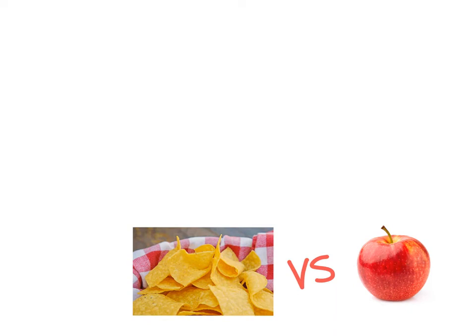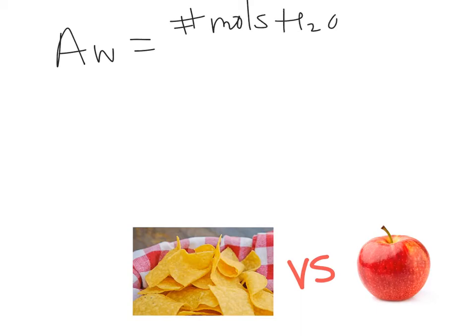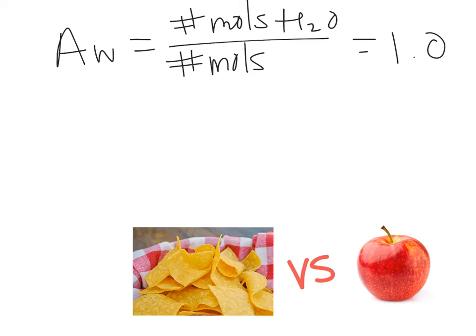Water activity is the fraction of water in food on a molecular basis — essentially the number of moles of H2O over the total number of moles of ingredients in your food. For pure water this is 1.0, but for something like chips or apples it will be below 1.0. Since chips are a dry, crunchy food they have a much lower water activity level than an apple, which is closer to 1.0 since it's quite juicy.